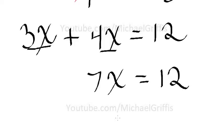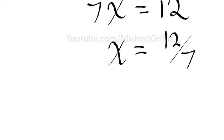And therefore x is equal to 12 over 7. So 12 sevenths of an hour. Let's just go ahead and plug that in the calculator.